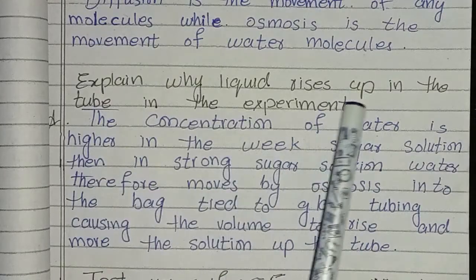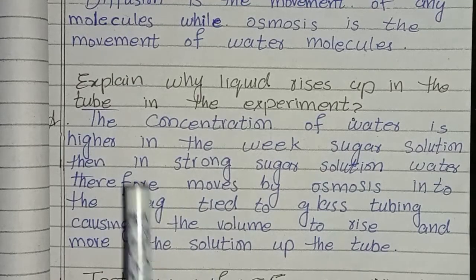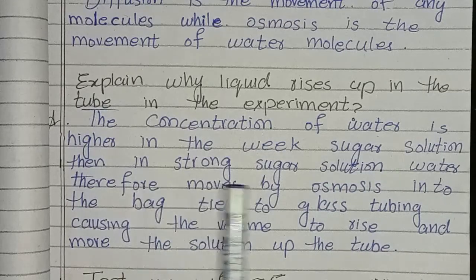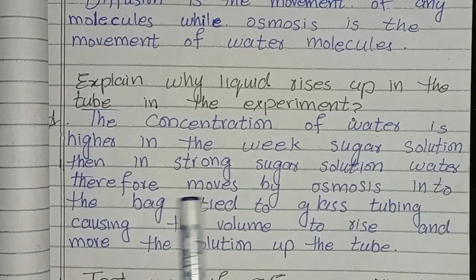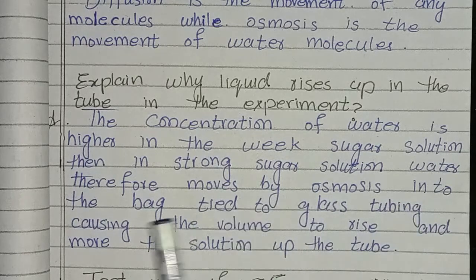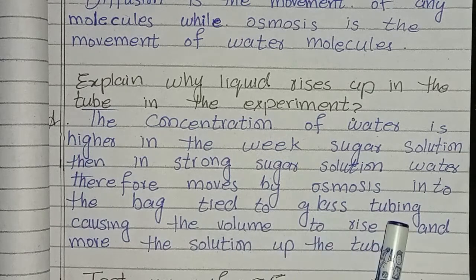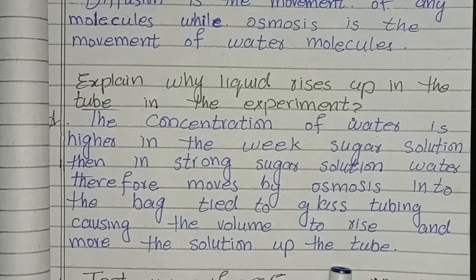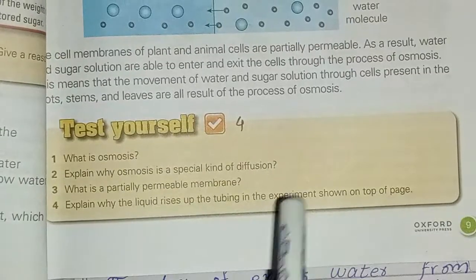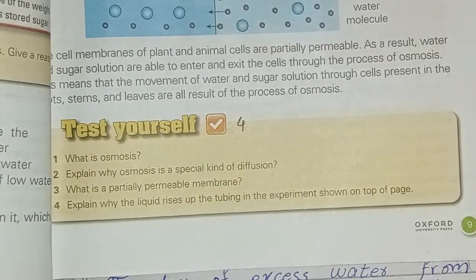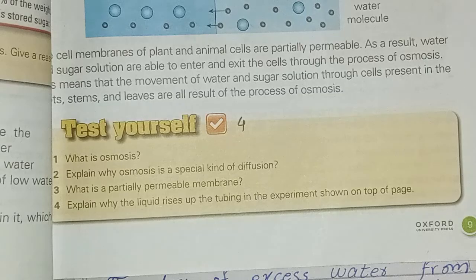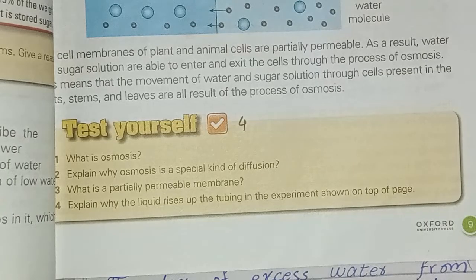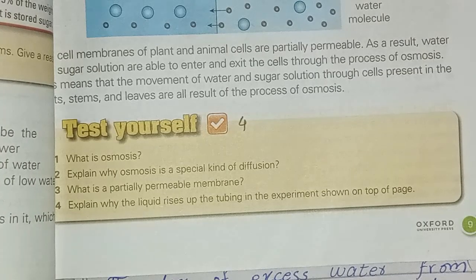Explain why liquid rises up in the tube in the experiment: The concentration of water is higher in the weak sugar solution than in the strong sugar solution. Water therefore moves by osmosis into the bag tied to the glass tubing, causing the volume to rise and move the solution up the tube. Please like and subscribe to the channel. I will see you in the next video — until then, Allah Hafiz.